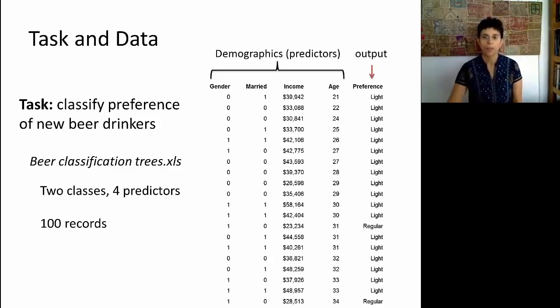The data that we'll use is a small dataset. It contains 100 records, and our goal is to classify the preference of new beer drinkers. So this is a predictive task. We have a bunch of demographics: the gender, one is male, marital status, one is married, income level, age in years, and here's our output of interest which has two classes, light or regular.